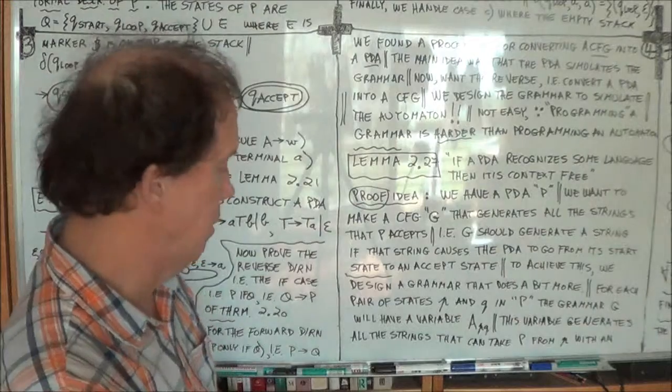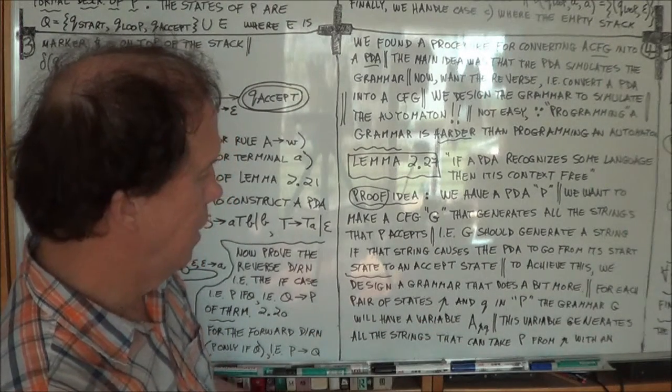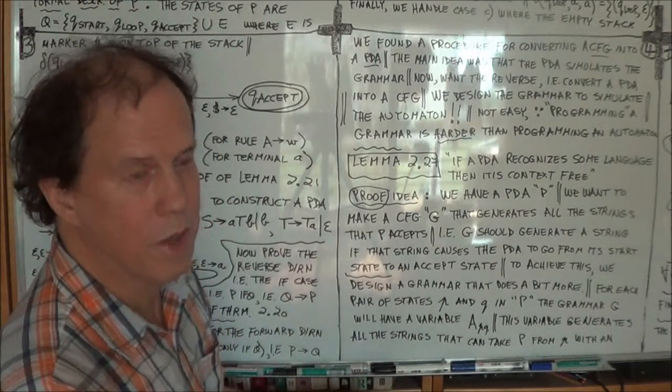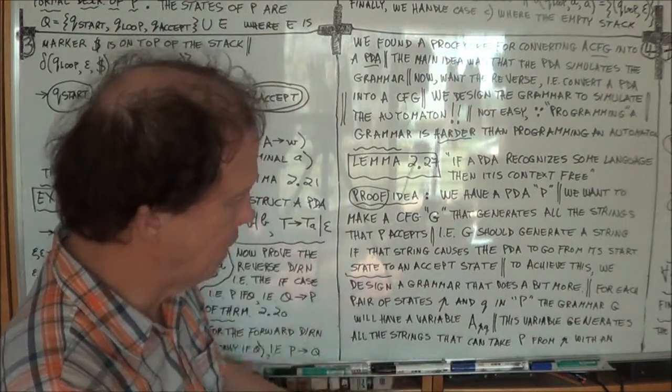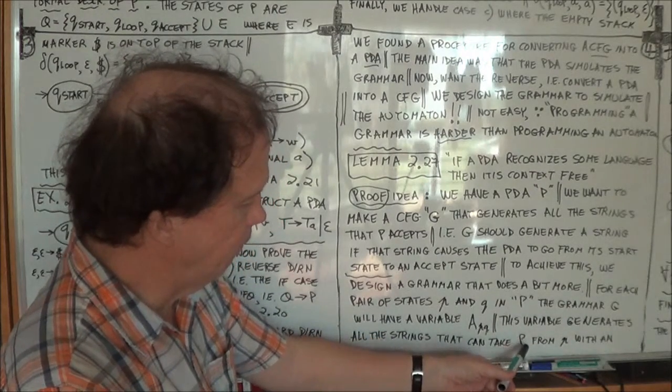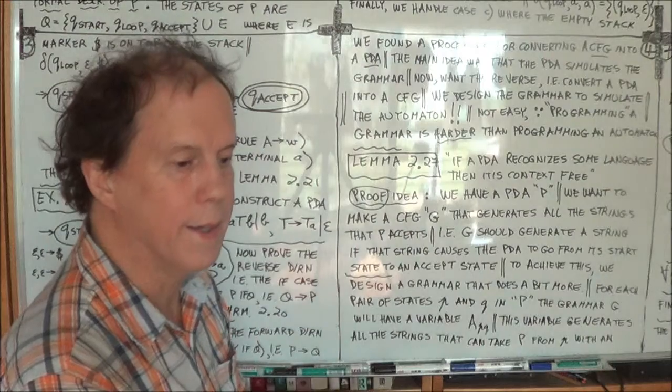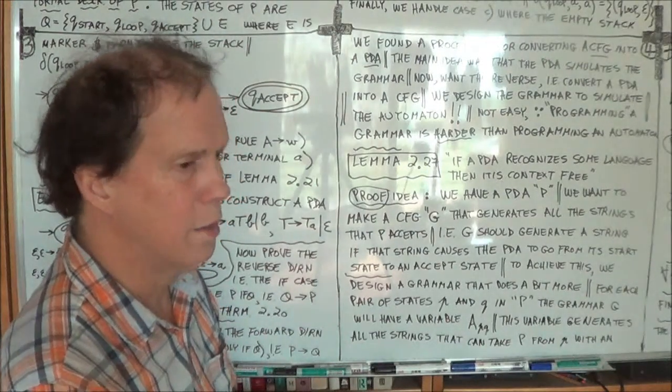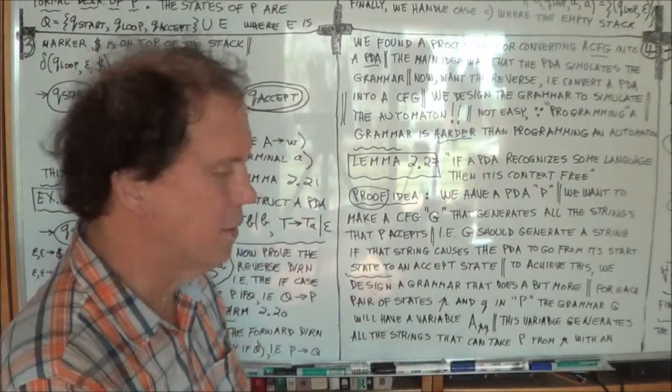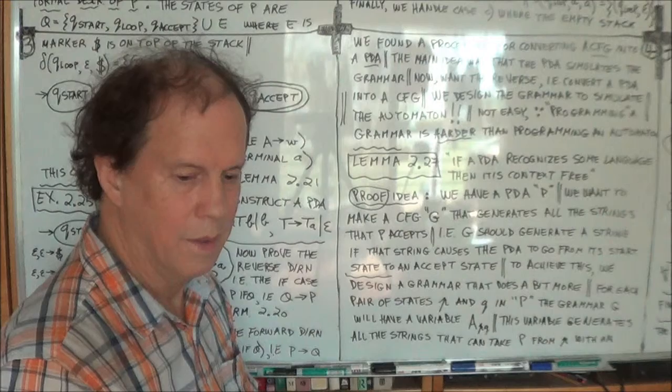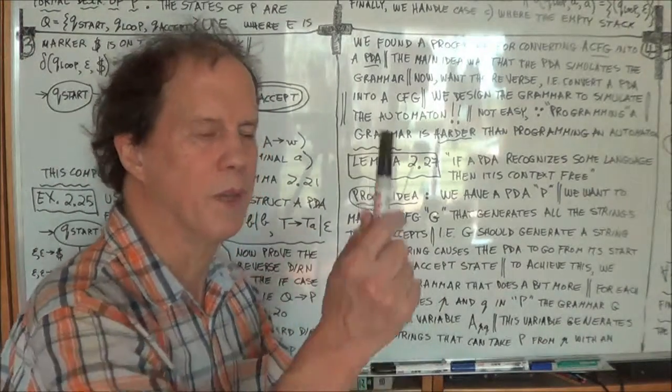Okay? Now what I've just said is critical. Think about it. You know, I'll say it again. So what does this variable, this A_PQ, what does it do? It generates all the strings, all the strings that would take the machine P, the PDA capital P, from state little p with an empty stack to a state little q with an empty stack. And you may say, so what? Well, think about it, because that's the heart of a proof. Because those strings would... no, I think I'll wait, I'll wait a bit, because we need an inductive proof later to make it all hang together. No, no, I'm jumping ahead a little bit. Okay.